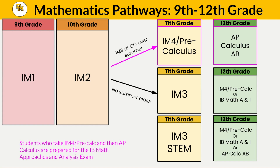Students who take IM4 in eleventh grade followed by AP Calculus AB in twelfth grade are prepared to take the IB Mathematics Approaches and Analysis exam at the end of their twelfth grade. Students who do not choose to take a summer class can take either Integrated Math 3 or Integrated Math 3 STEM in eleventh grade. Students who took Integrated Math 3 in eleventh grade can take IM4 Pre-Calculus or the IB Applications and Interpretations math class in twelfth grade. If students chose IM3 STEM in eleventh grade, they have the additional option of taking AP Calculus AB.